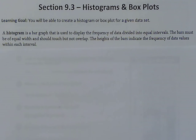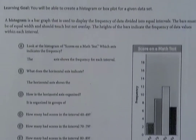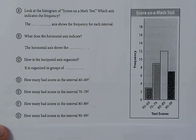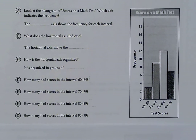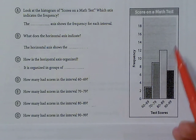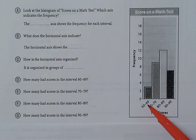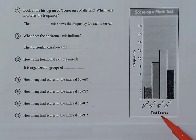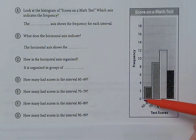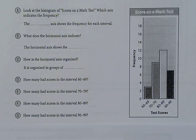The heights of the bars indicate the frequency of data values within each interval. So if it meets at eight, that means that the data set occurs that many times in that interval. We have our histogram here on the right — it talks about scores on a math test. We have the intervals of 60 to 69, 70 to 79, 80 to 89, and 90 to 99. The frequency is shown on the left — how often the score ended up in that interval.